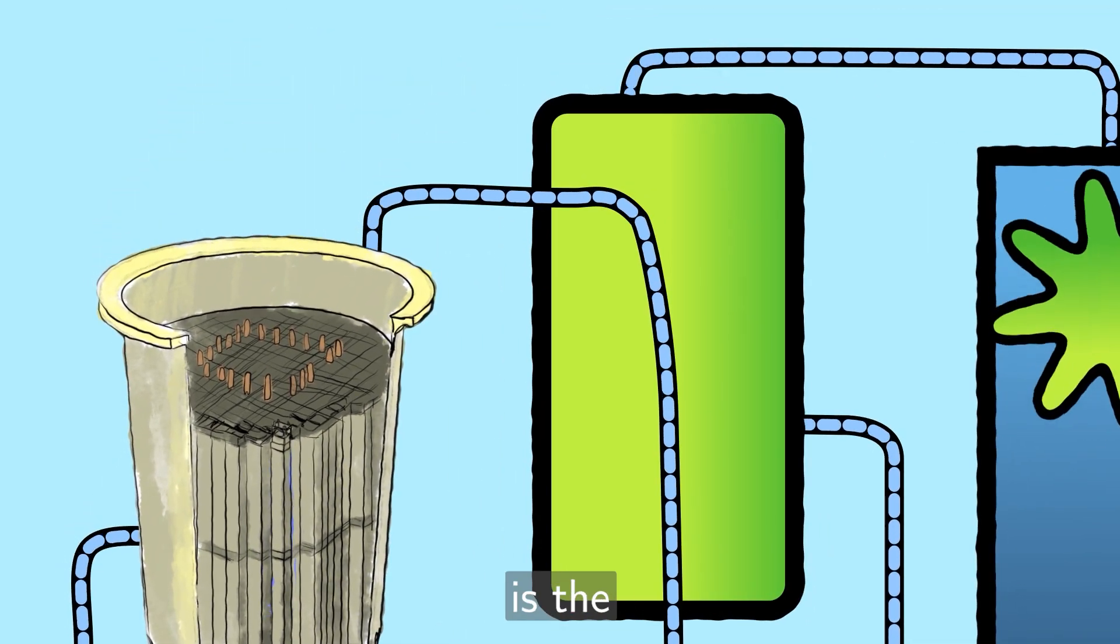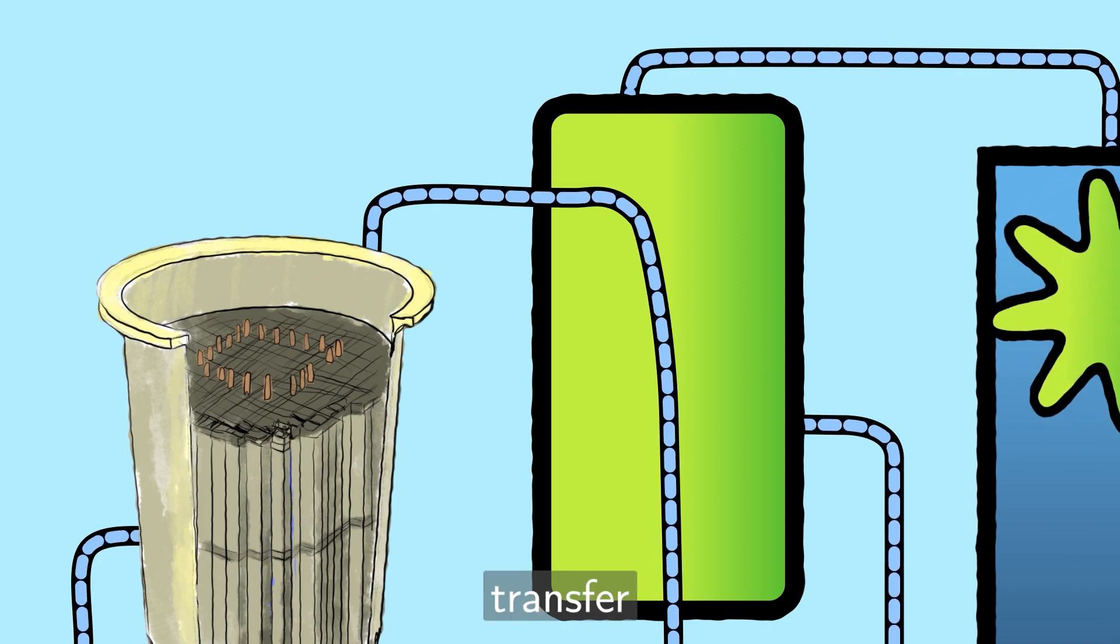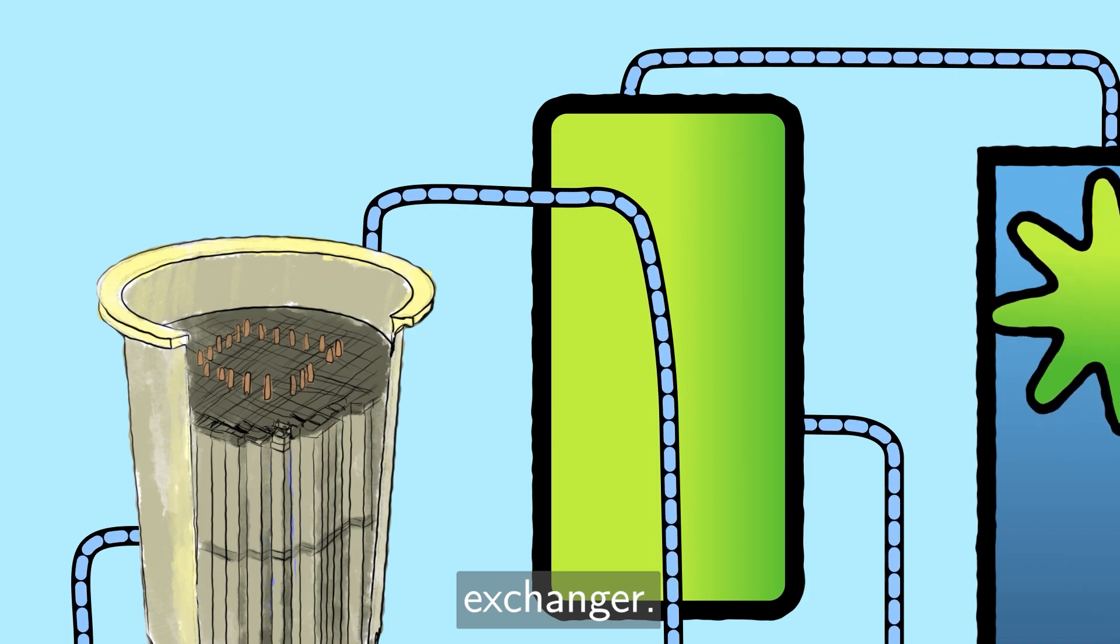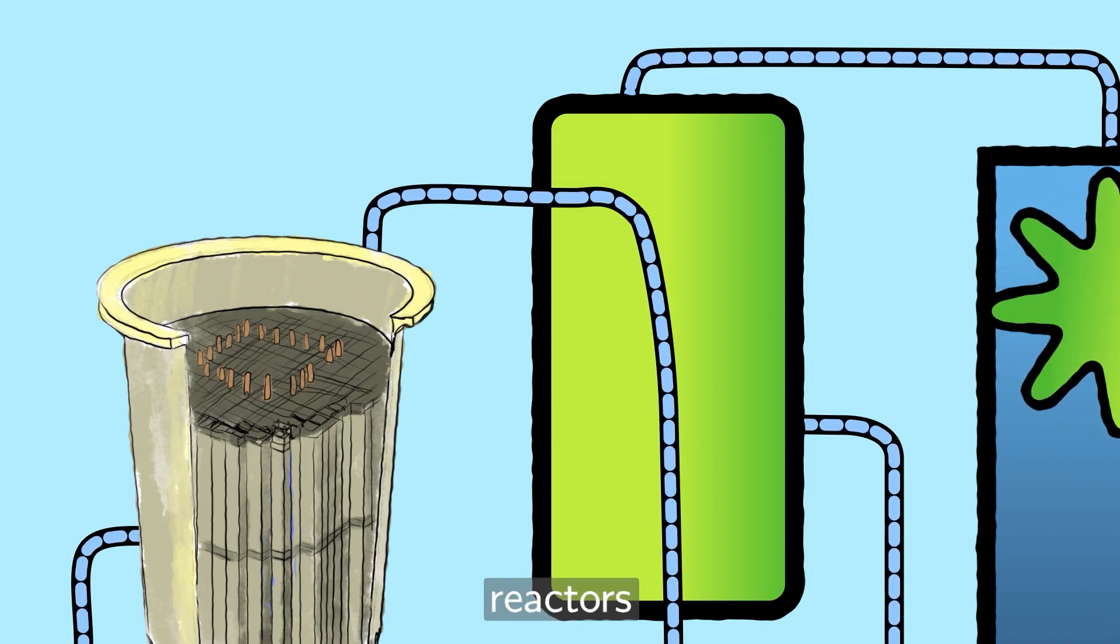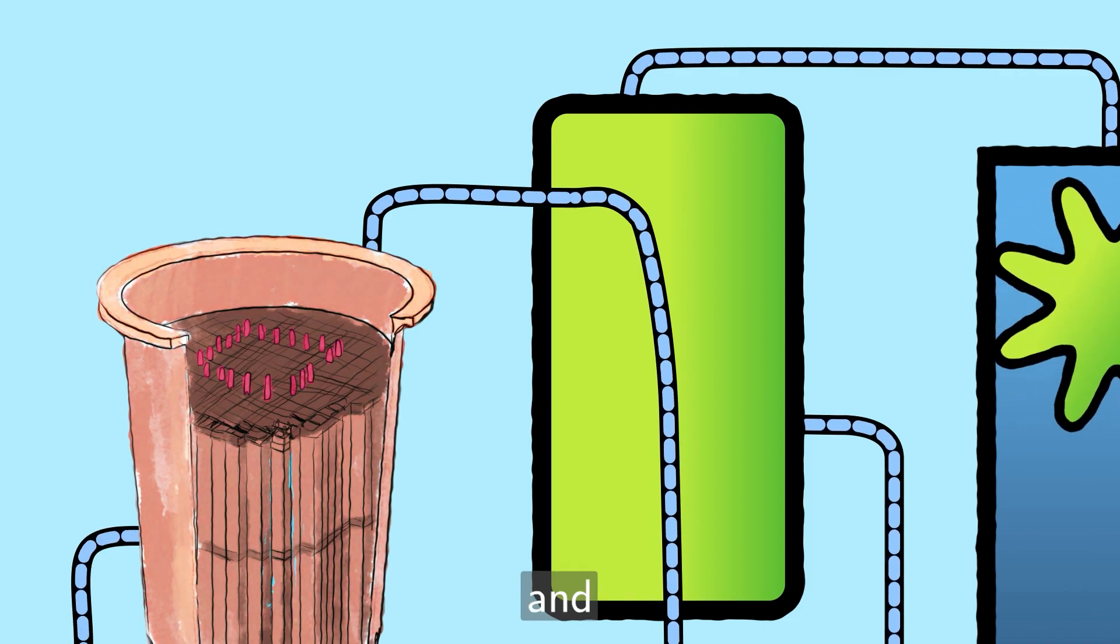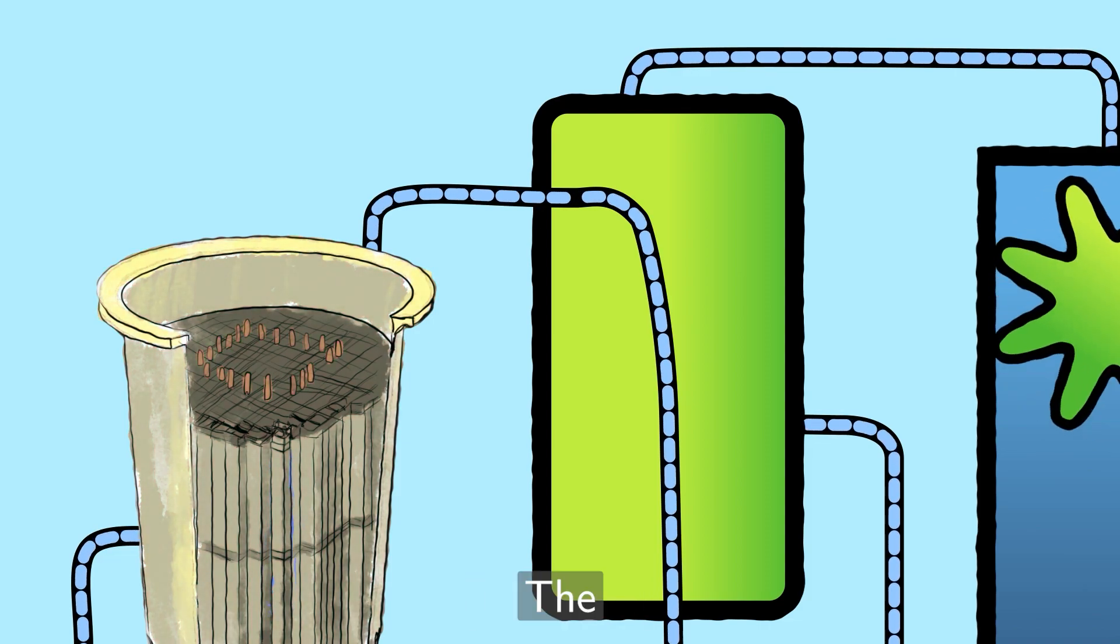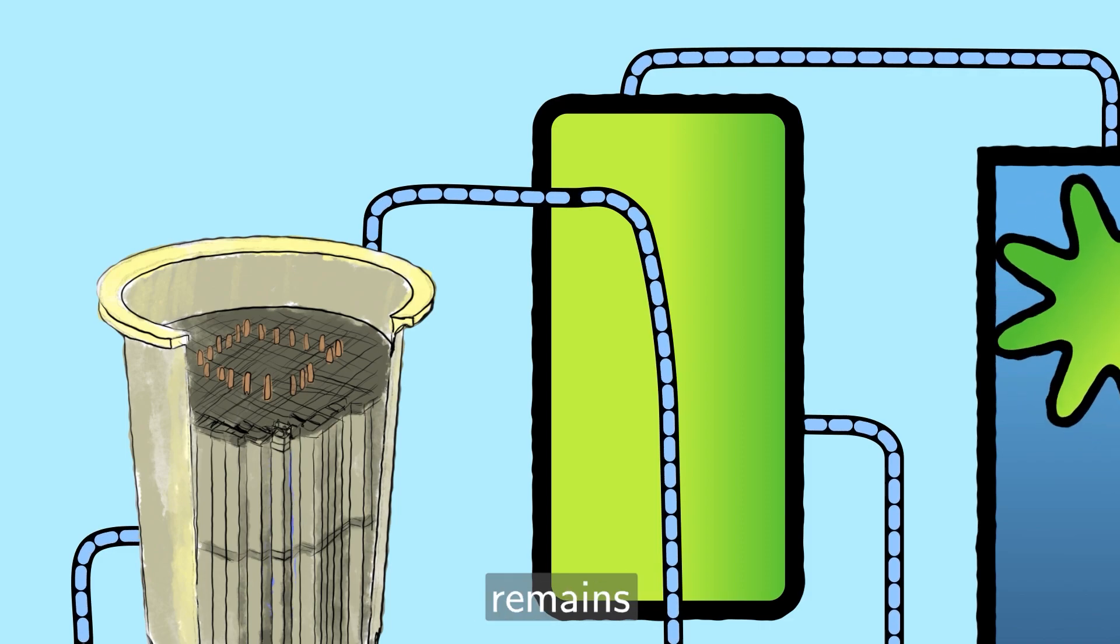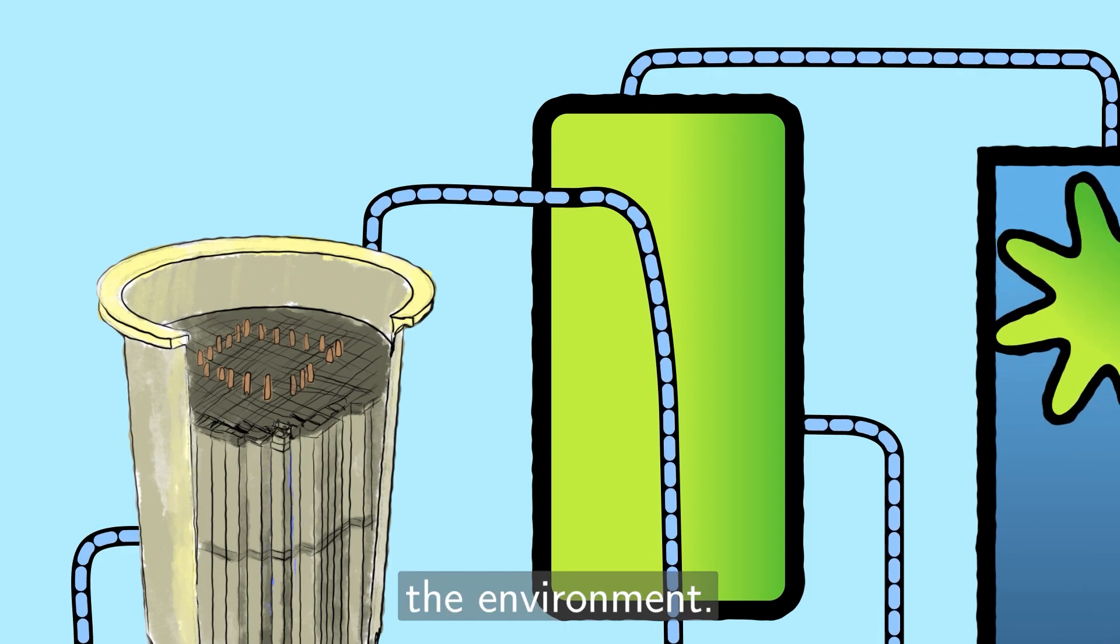The reactor coolant is the fluid that circulates through the reactor core in a nuclear reactor to transfer heat away from the fuel and carry it to a heat exchanger. The reactor coolant is an essential component of all nuclear reactors as it helps to regulate the temperature and pressure in the reactor core and ensures the safe and efficient operation of the reactor. The reactor cooling is carefully monitored and controlled to make sure that it remains at a safe temperature and pressure and to prevent any leaks or contamination of the environment.